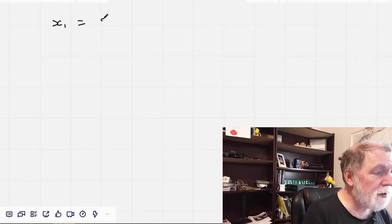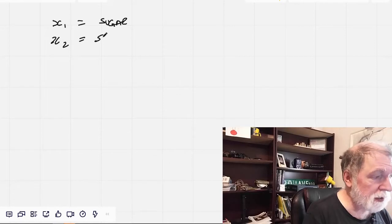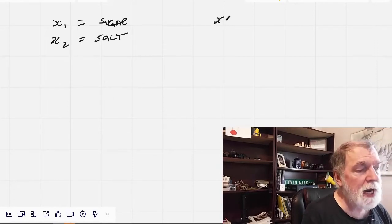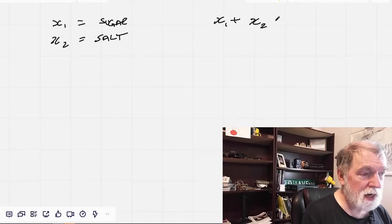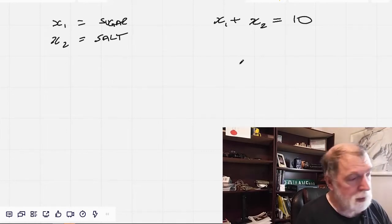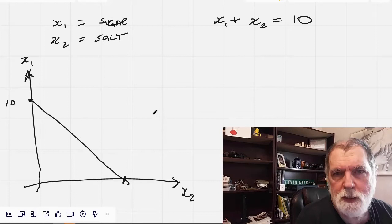Let's go back to our sack of sugar and salt, but to emphasize the fact that we could potentially be dealing with more dimensions than there are letters in the alphabet, instead of x and y we're going to use subscripts to distinguish our variables. So x subscript 1 will be sugar, x subscript 2 will be salt. And so now we've got x1 plus x2 equals 10. Same line as before, just different labels.